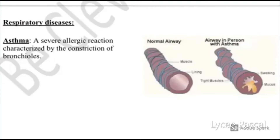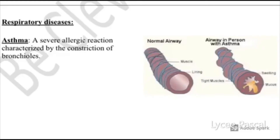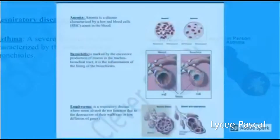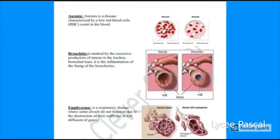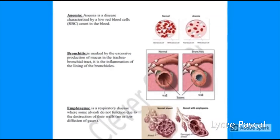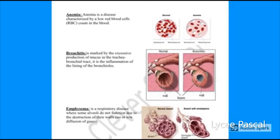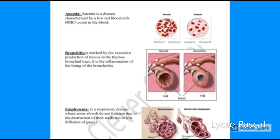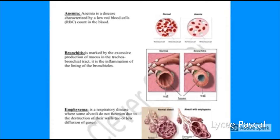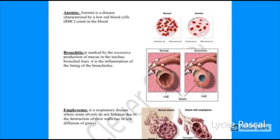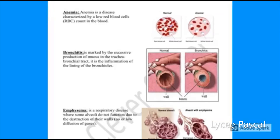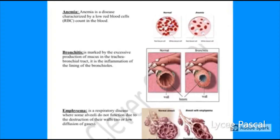Asthma is characterized by the constriction of bronchioles. Bronchitis is marked by excessive production of mucus in the tracheobronchial tract. Emphysema is a respiratory disease where some alveoli do not function due to the destruction of their walls.